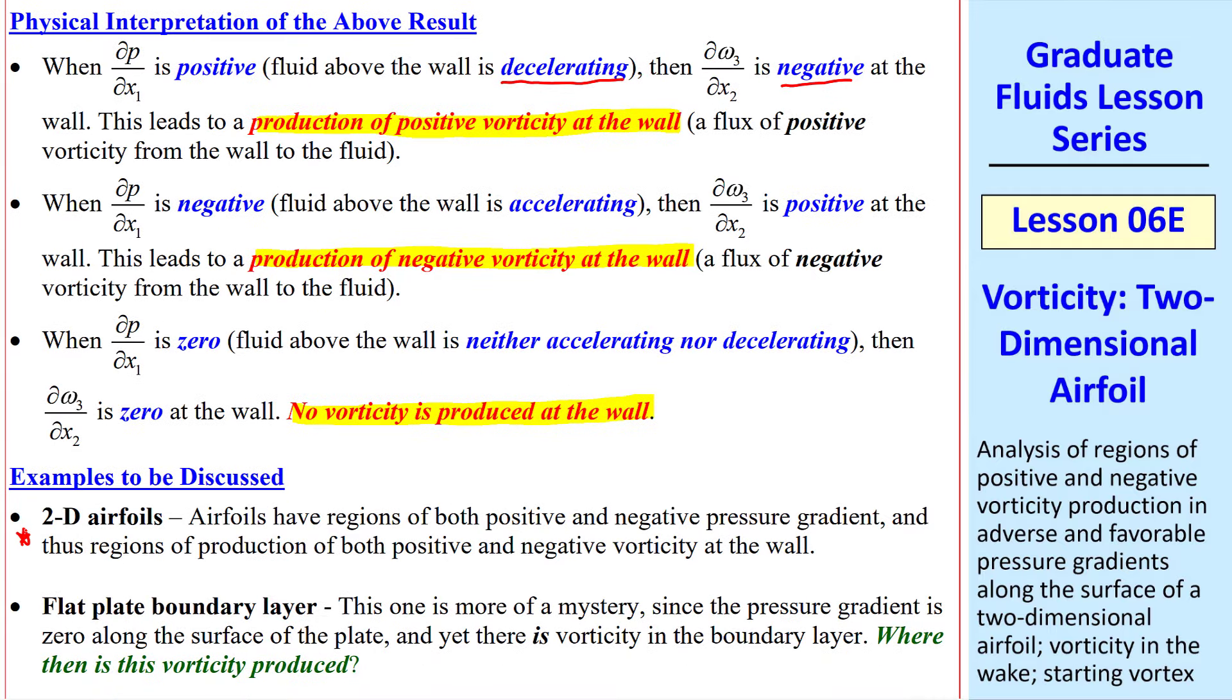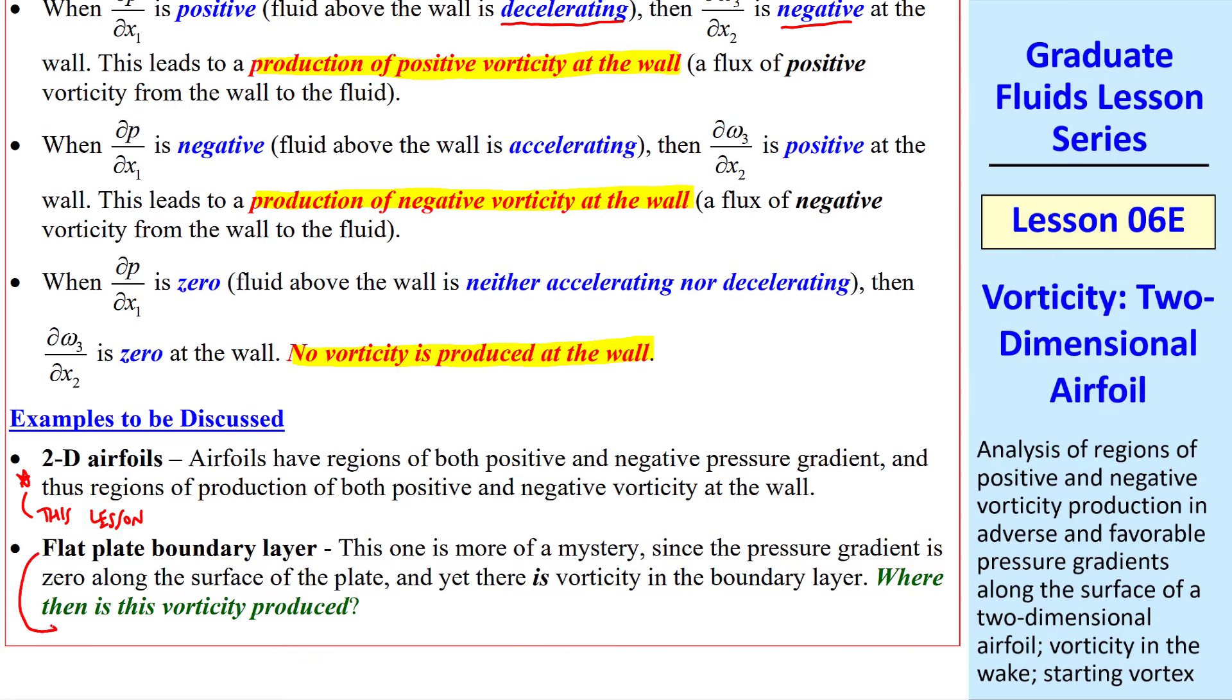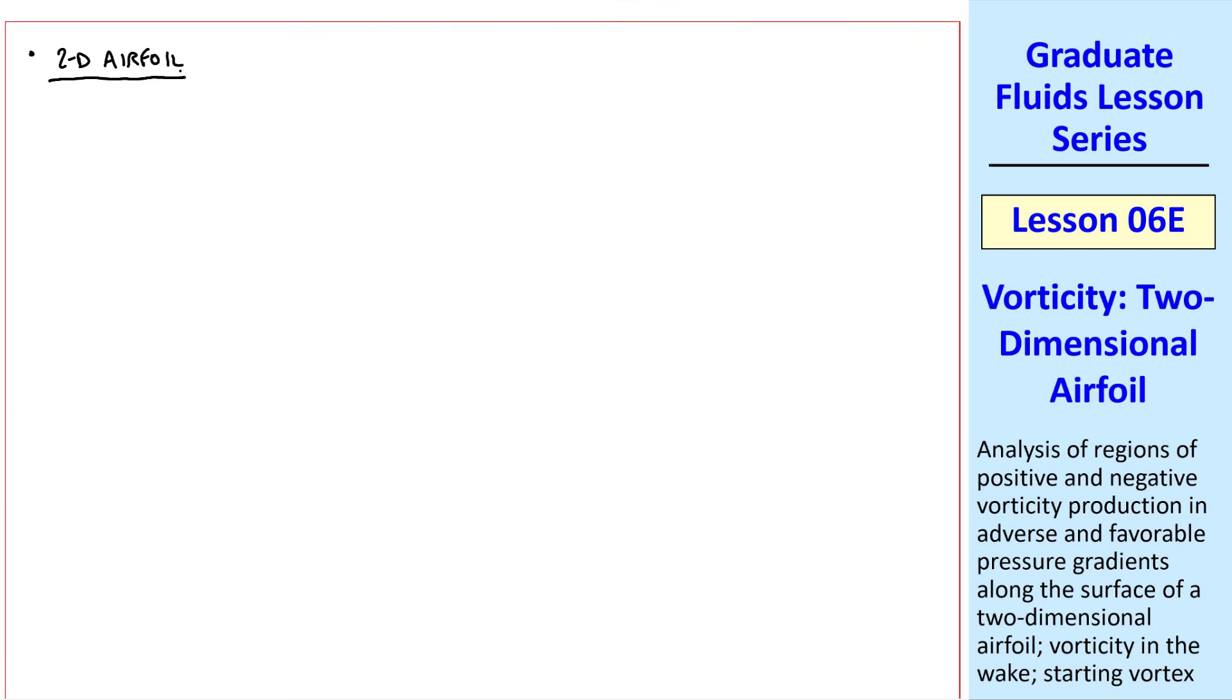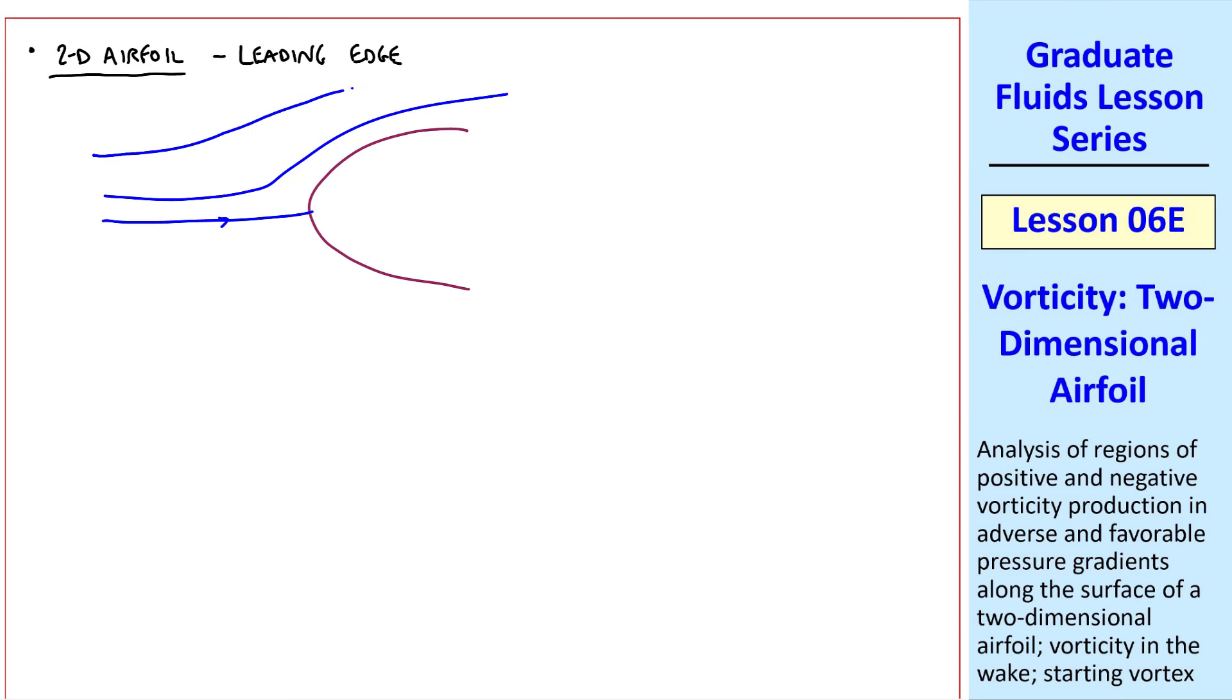We'll discuss two examples of this. The 2D airfoil case will be discussed in this lesson, and the flat plate boundary layer will be discussed in the next lesson. Let's consider a 2D airfoil, specifically the leading edge of the airfoil. Here are some streamlines around the upper portion of the leading edge of this airfoil. Recall that in boundary layer coordinates, X1 or X is always parallel to the wall, and X2 or Y is always normal to the wall.